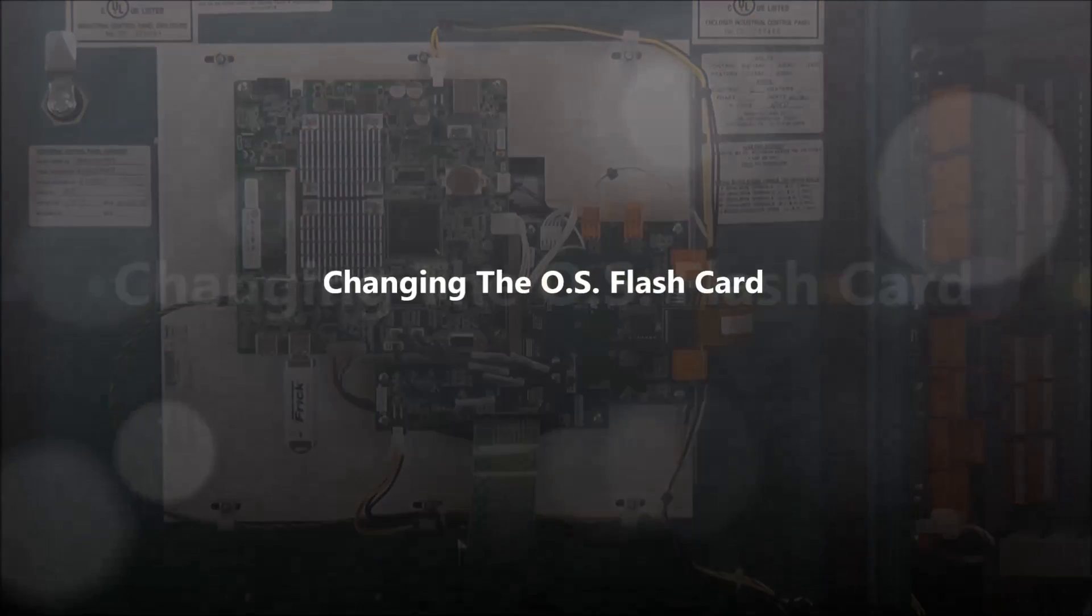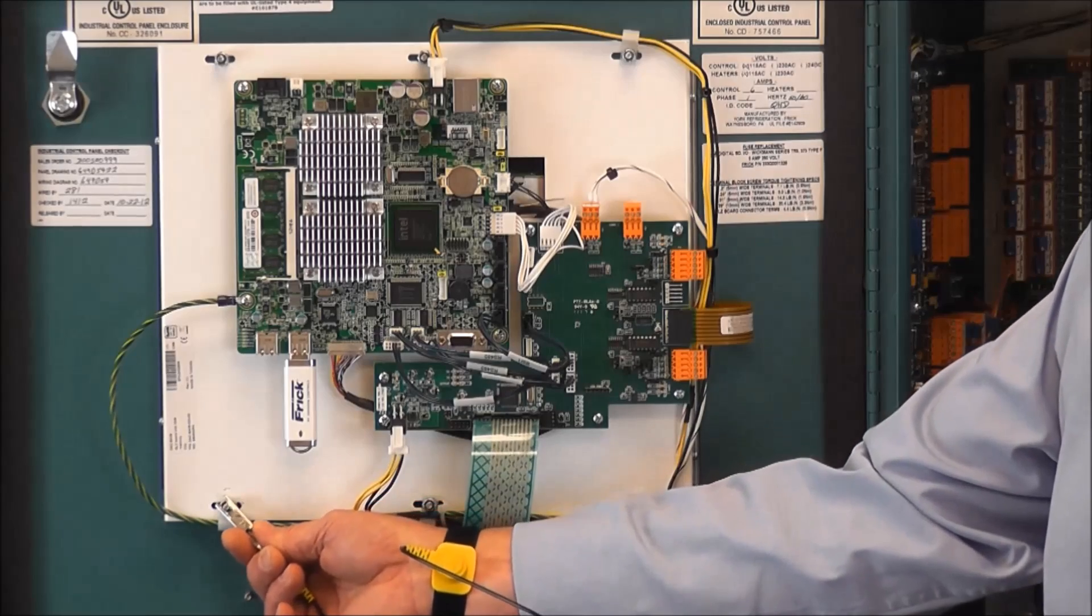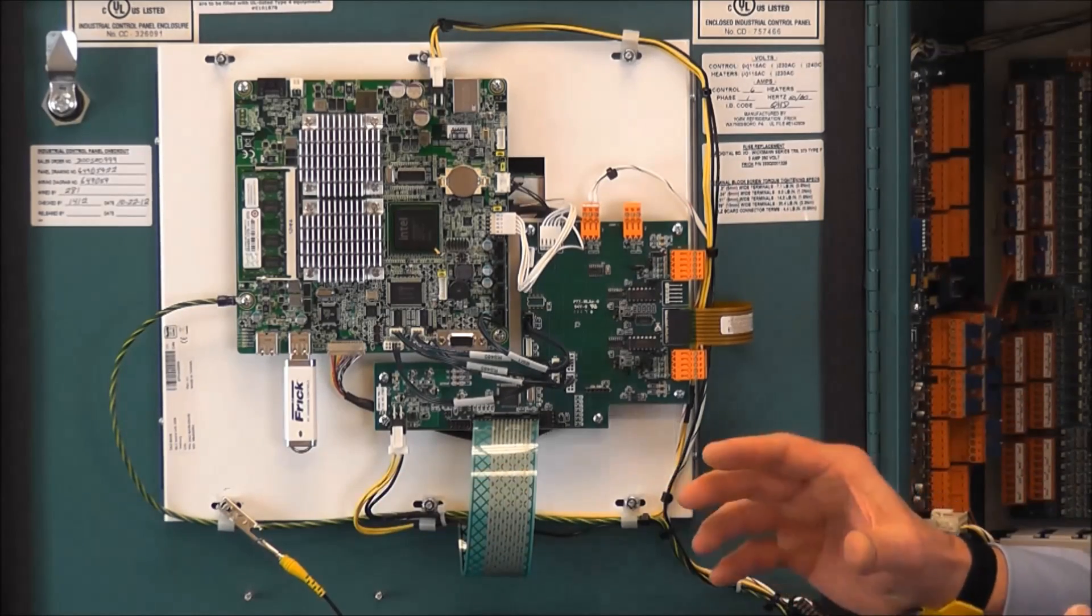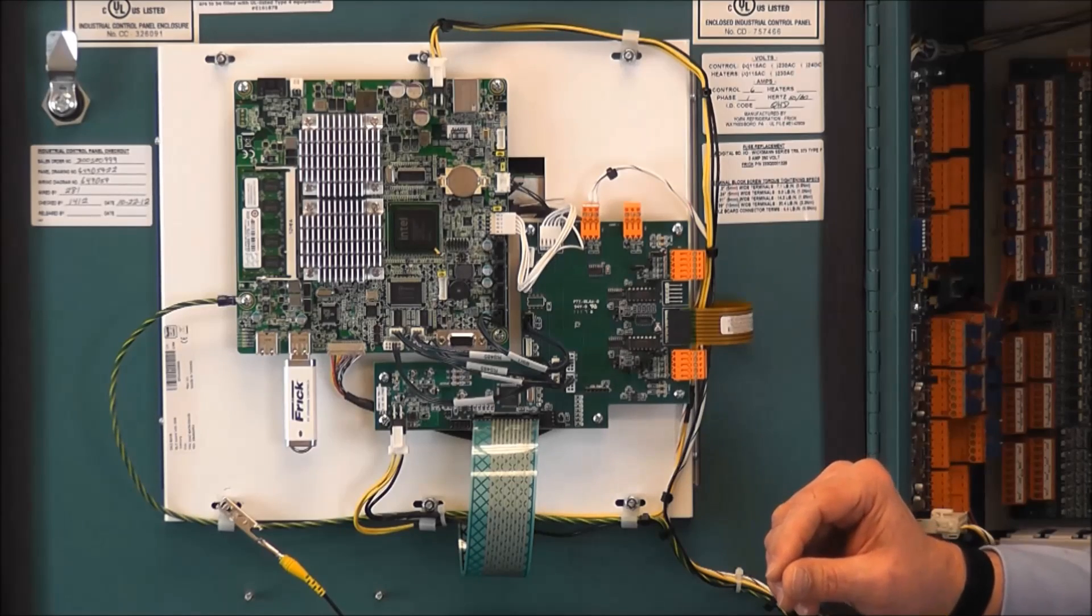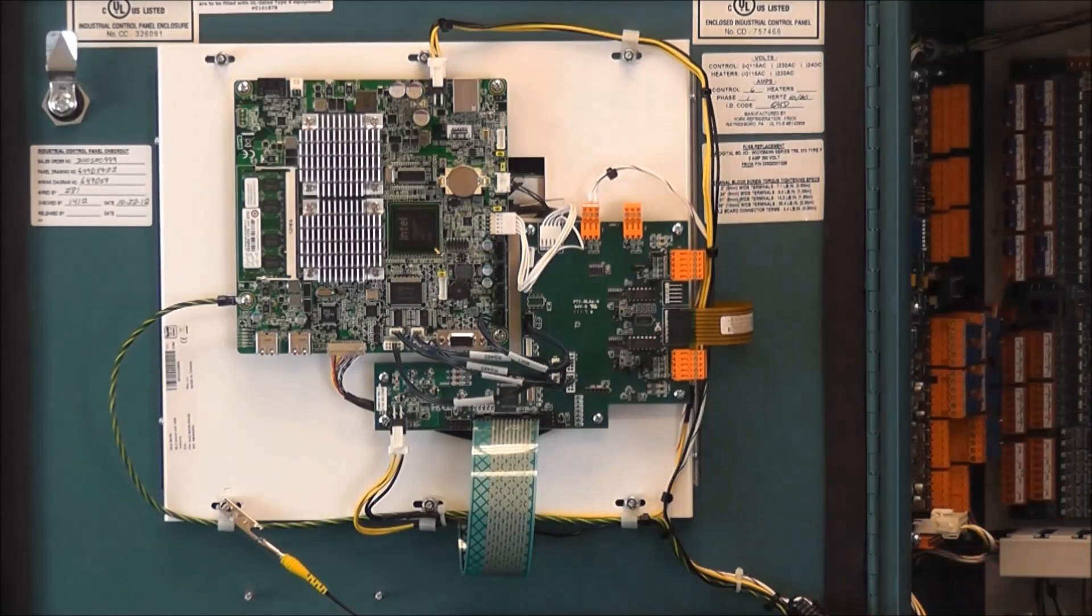Now that we have the door of the Quantum HD controller open, the first thing we always want to do is to attach an anti-static wristband to a ground point to avoid any static damage to the board or any other components. Next, we will remove the USB thumb drive and set that off to the side.